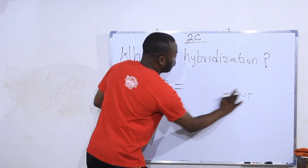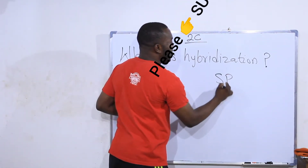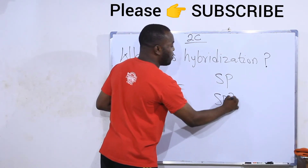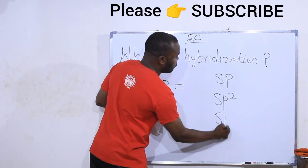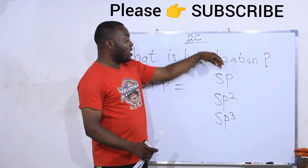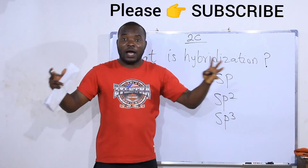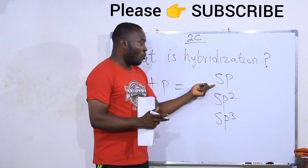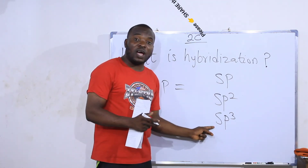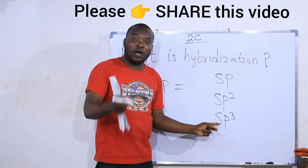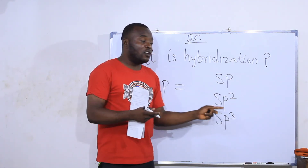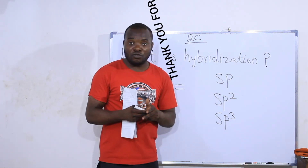We have SP hybrid orbitals, SP2 hybrid orbitals, and SP3 hybrid orbitals. These orbitals are formed when S and P orbitals are mixed together. The orbitals formed are called hybrid orbitals, while the process of forming hybrid orbitals is known as hybridization.